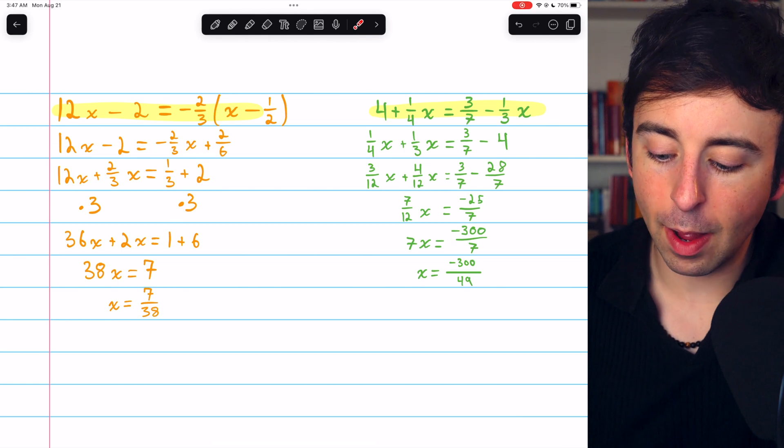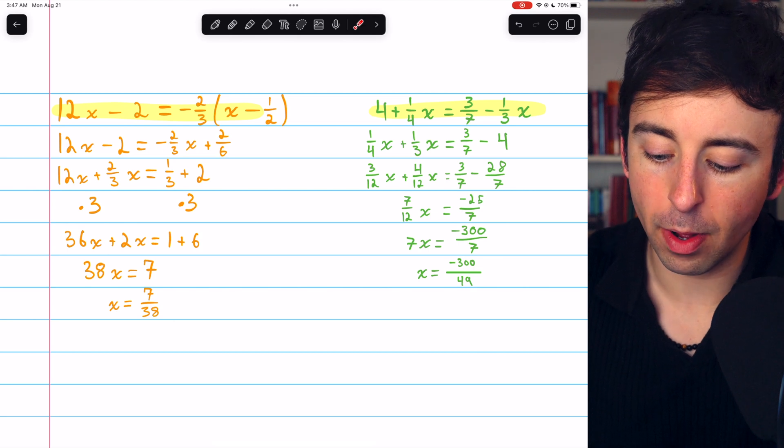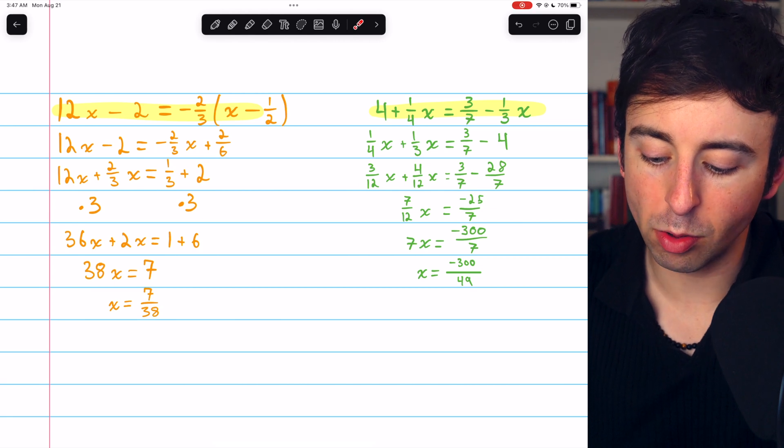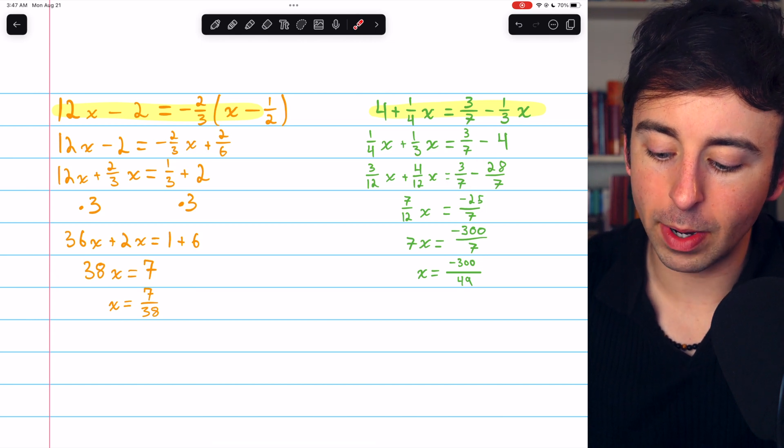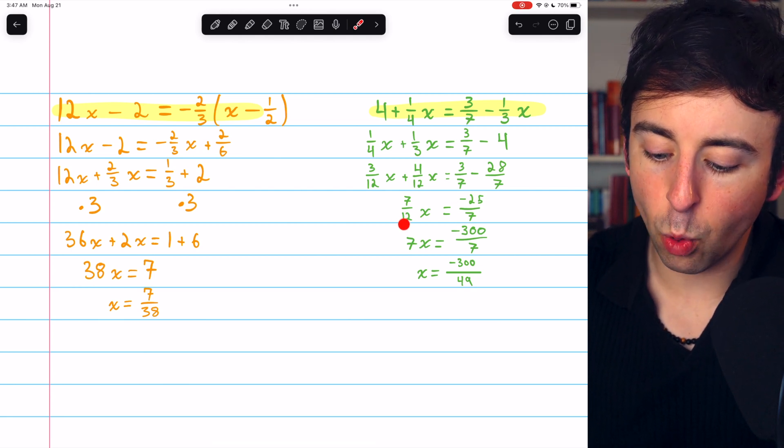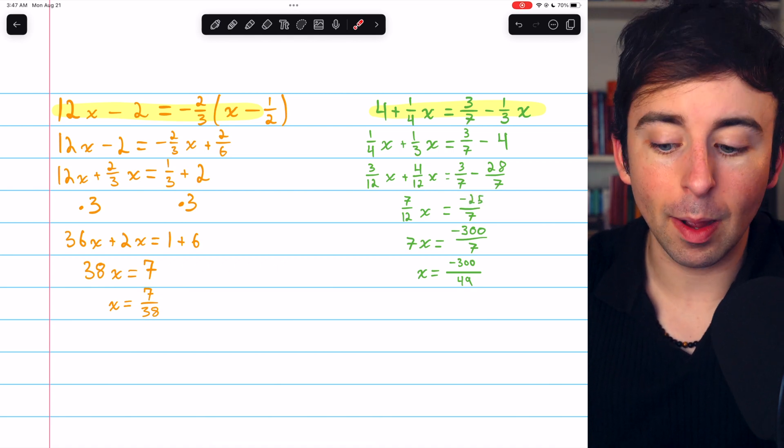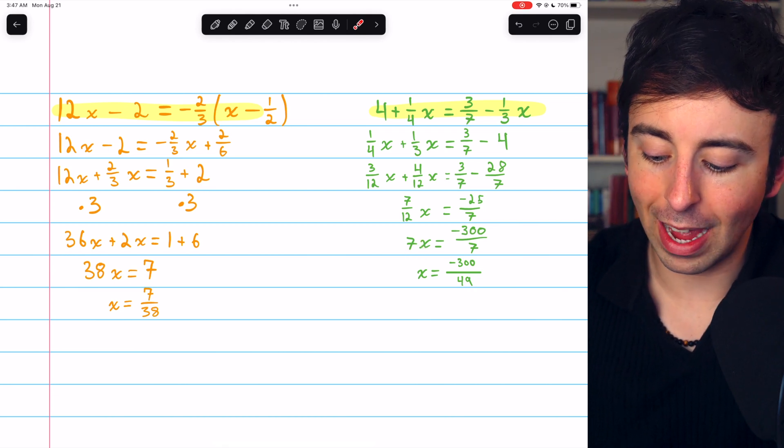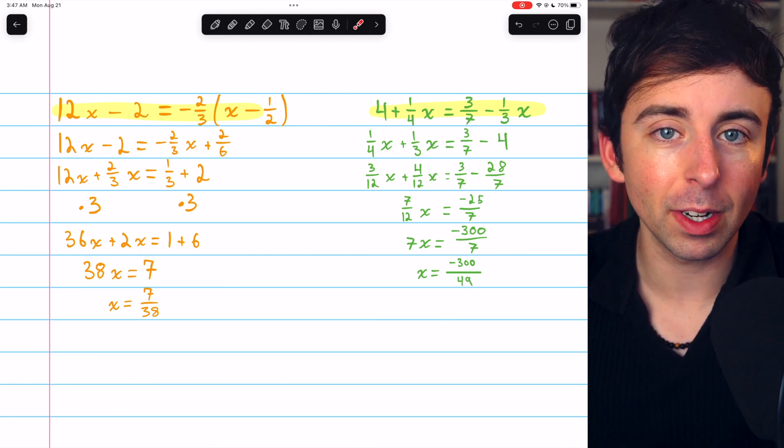For the second equation, I began by adding 1/3x to both sides and subtracting 4 from both sides. Then 1/4x and 1/3x, I gave those common denominators so that they could subtract to negative 25/7. Then multiplied both sides by 12 to get rid of that denominator of 12 on the left. Negative 25 times 12 is negative 300. And then divide both sides by 7 to finish getting x by itself. That turns the denominator of 7 into 49 because we divided by an additional factor of 7.